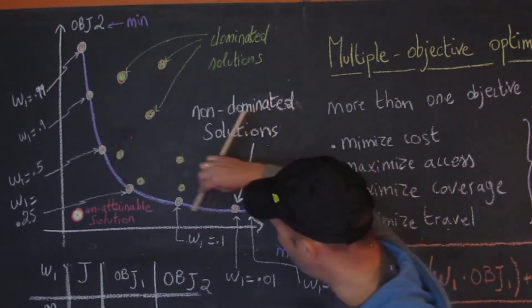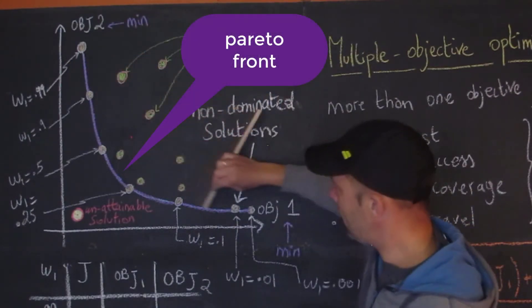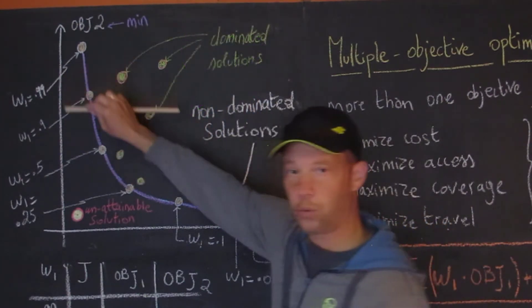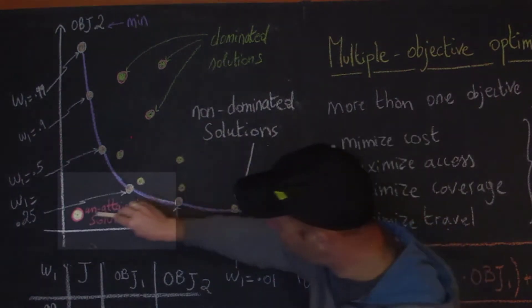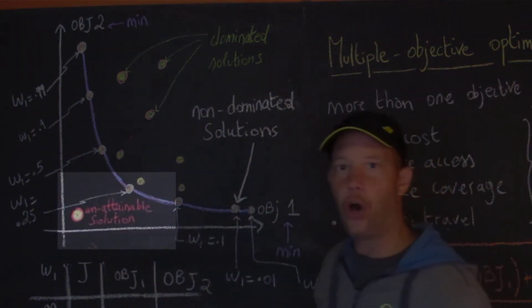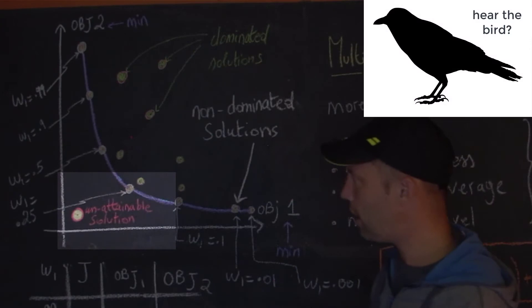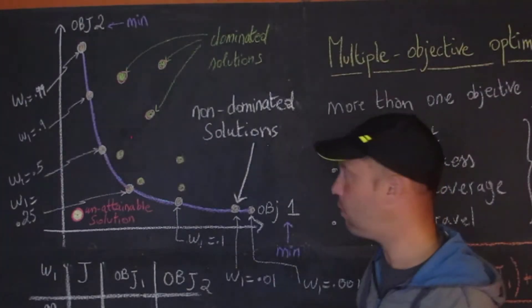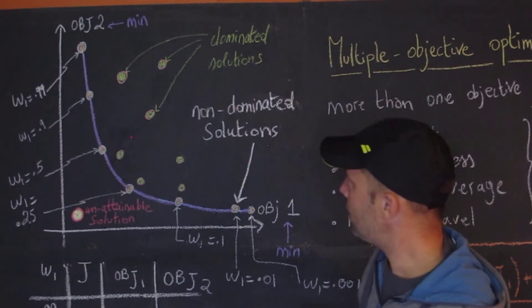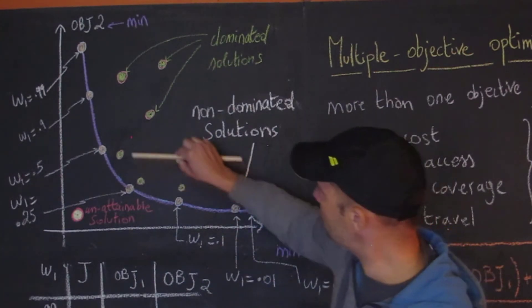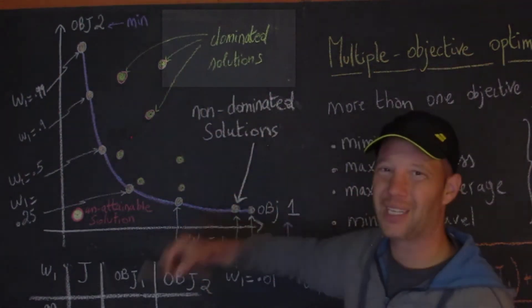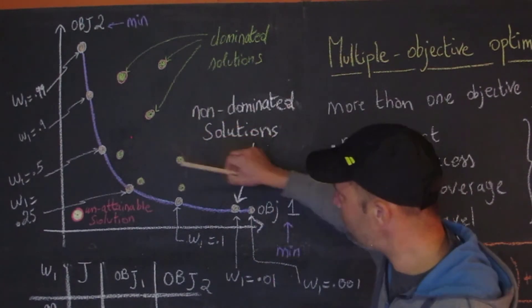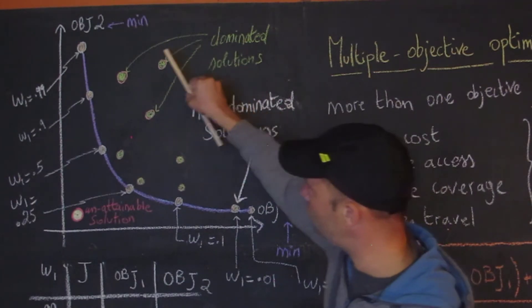Now this purple line is called the Pareto front. It's basically linking all the non-dominated solutions. This one here in red and yellow is what's called an unattainable solution - we cannot find that solution, it's simply impossible. What are the other ones? Those are called dominated solutions, so those are not very good. I'm going to talk briefly now about how we can go from dominated solutions to non-dominated solutions that are along the Pareto front.